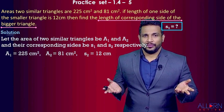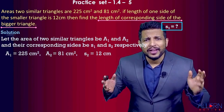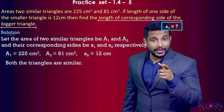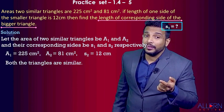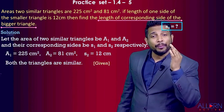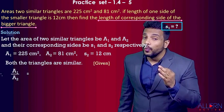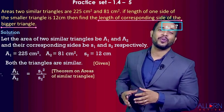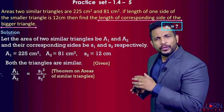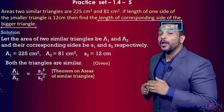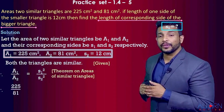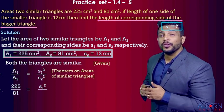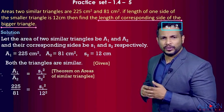We want the length of the corresponding side of the bigger triangle, i.e., the value of s1. Since both triangles are similar, we apply the theorem: a1/a2 = s1²/s2² (theorem on areas of similar triangles). Substituting: 225/81 = s1²/12².